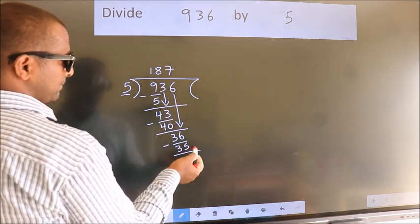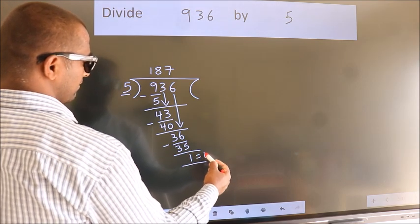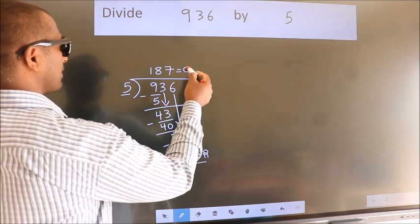No more numbers to bring down. So we stop here. This is our remainder. This is our quotient.